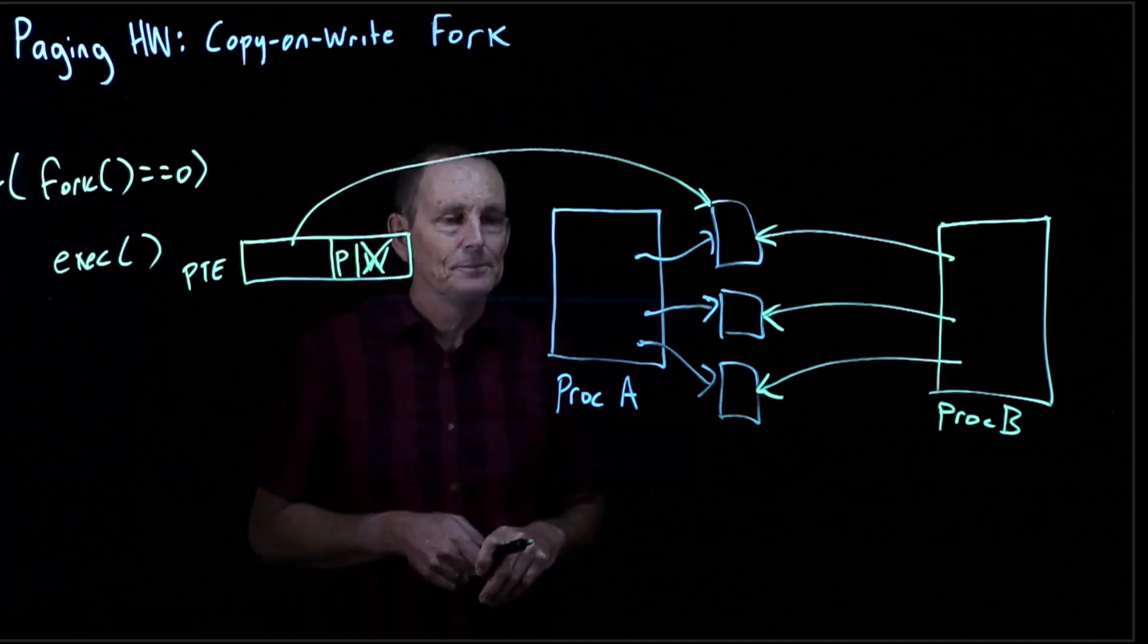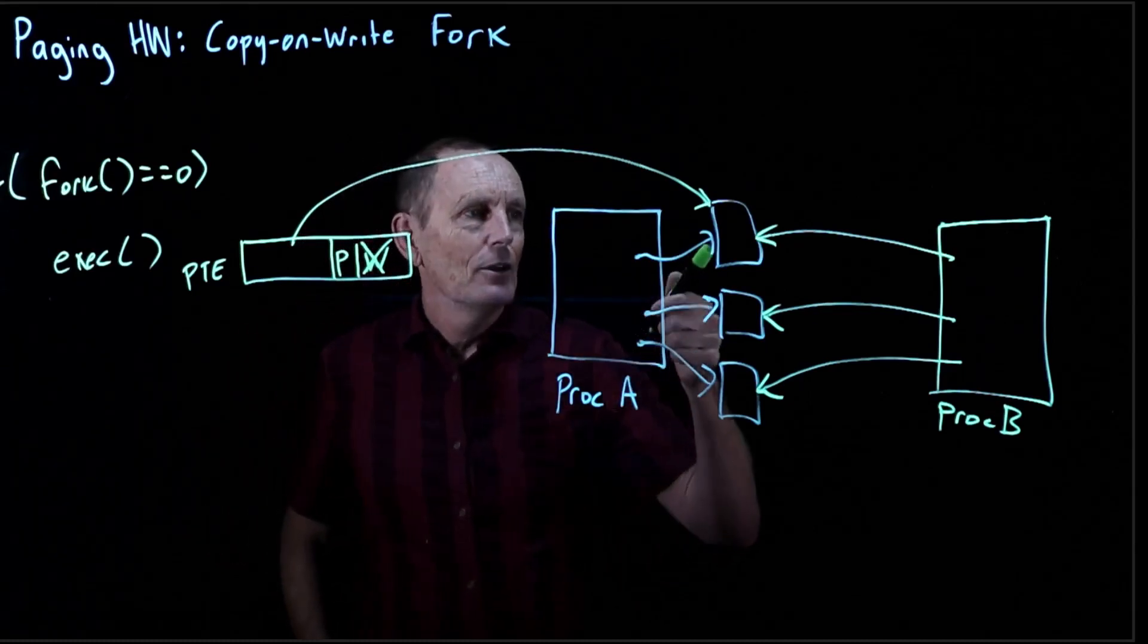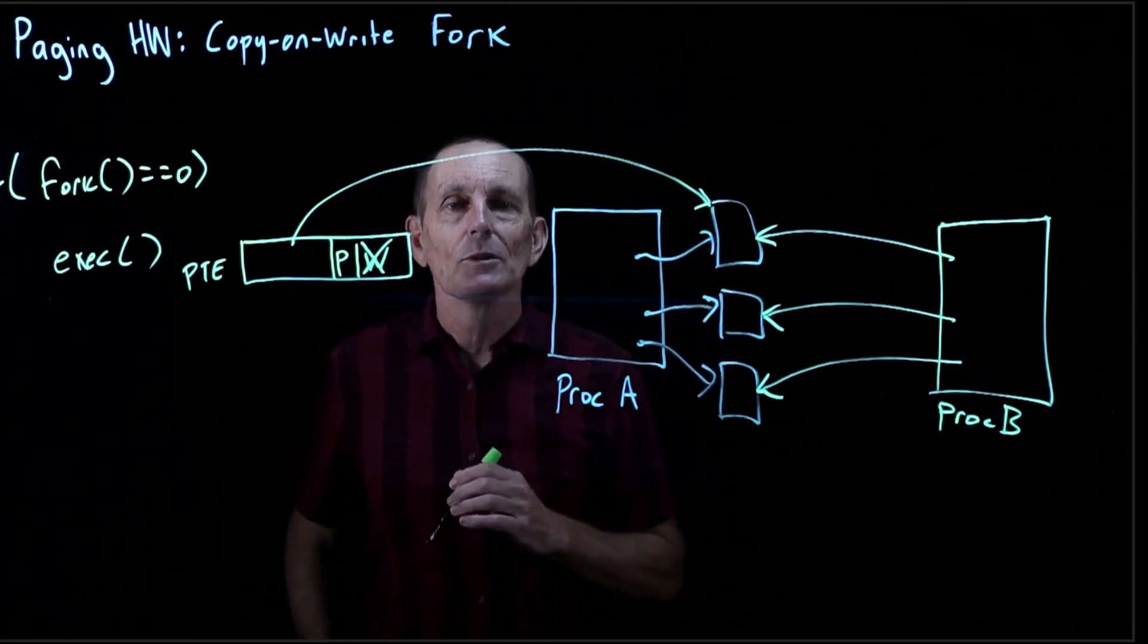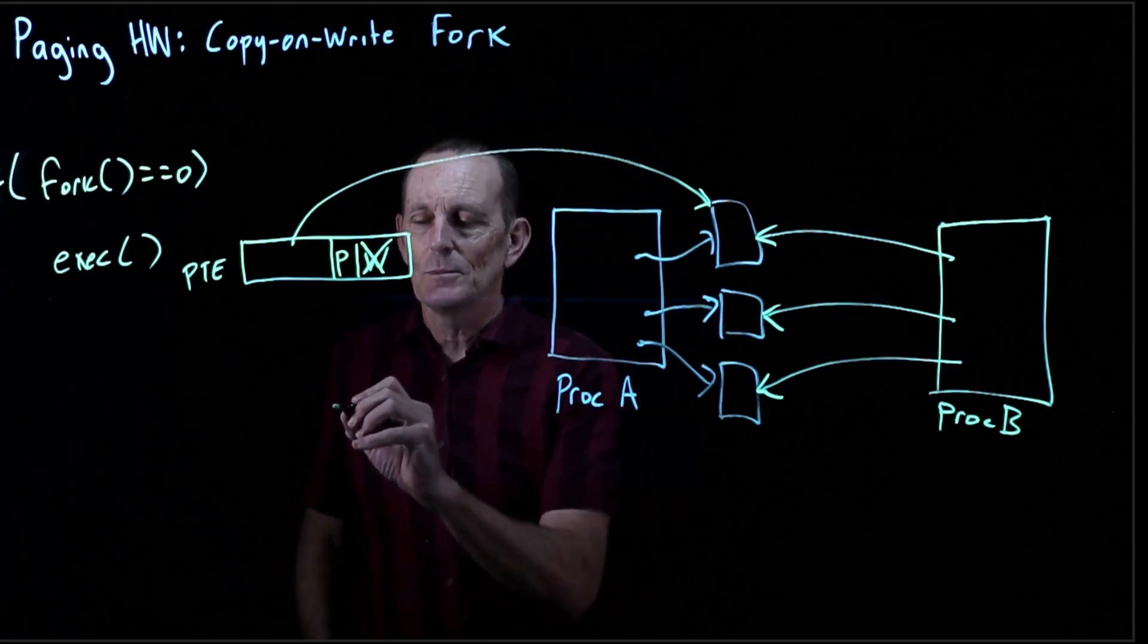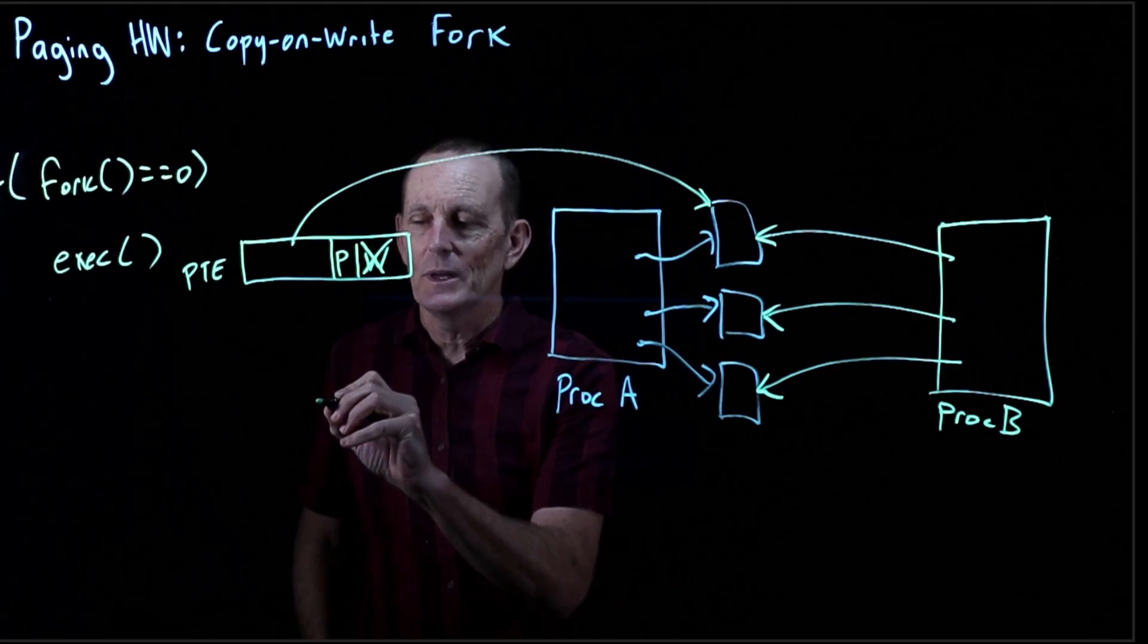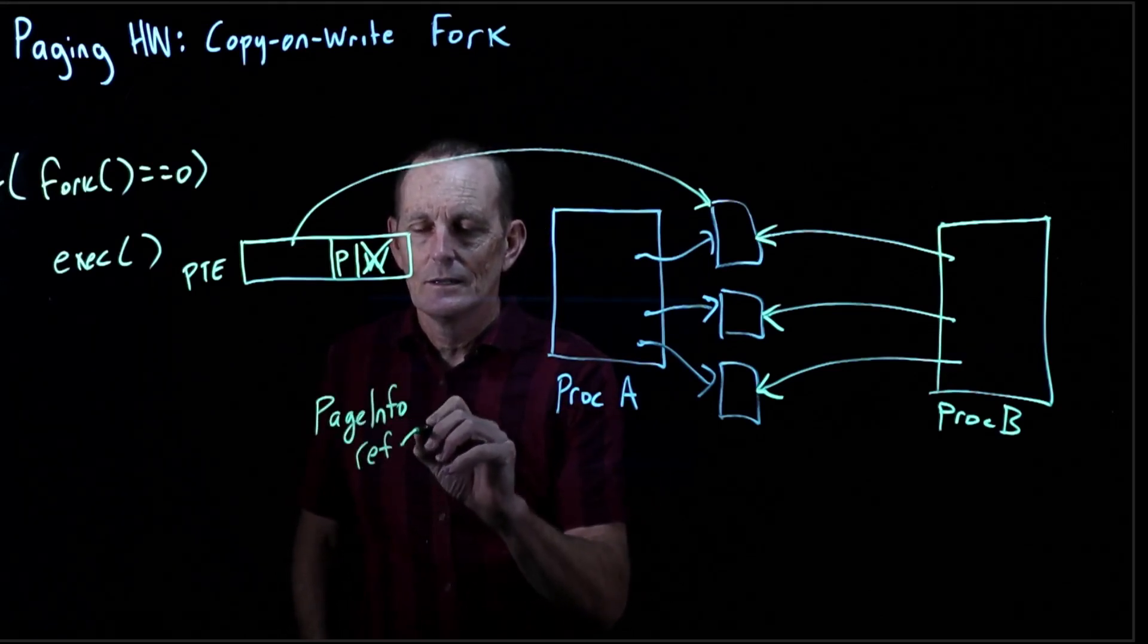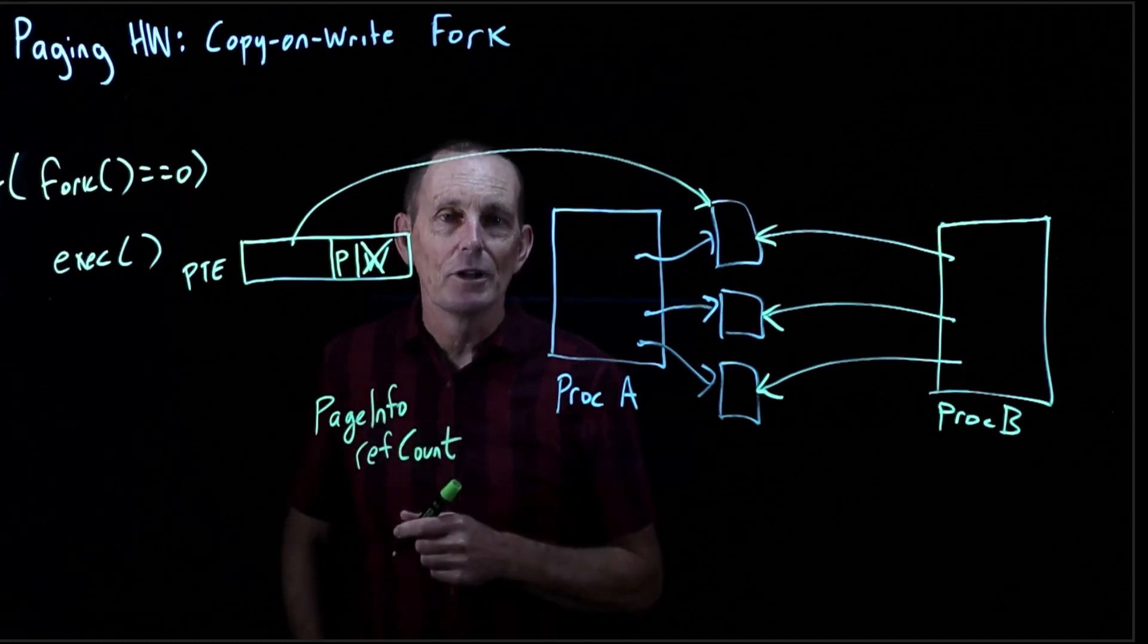And then what will happen is we'll have to keep some sort of data structure that keeps track of the fact that this page is in use by multiple processes. Really what we can do is keep some sort of info about a page, and we can keep inside this a reference count.